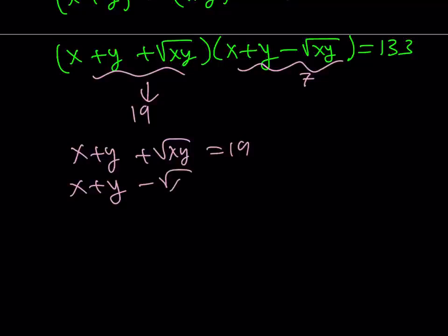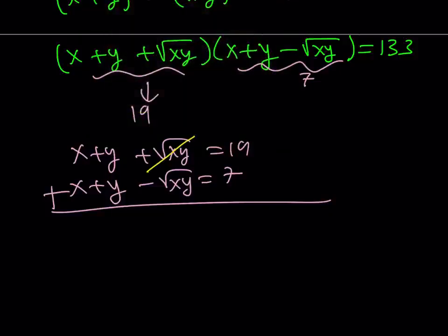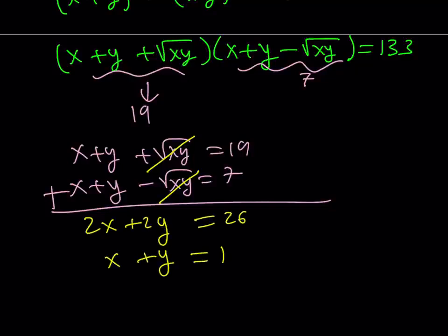And this is 19, and this is 7. Now, if you solve this system, obviously it's very easy to solve, by the way, you're going to find out that 2x plus 2y is equal to 26, which means x plus y is equal to 13.